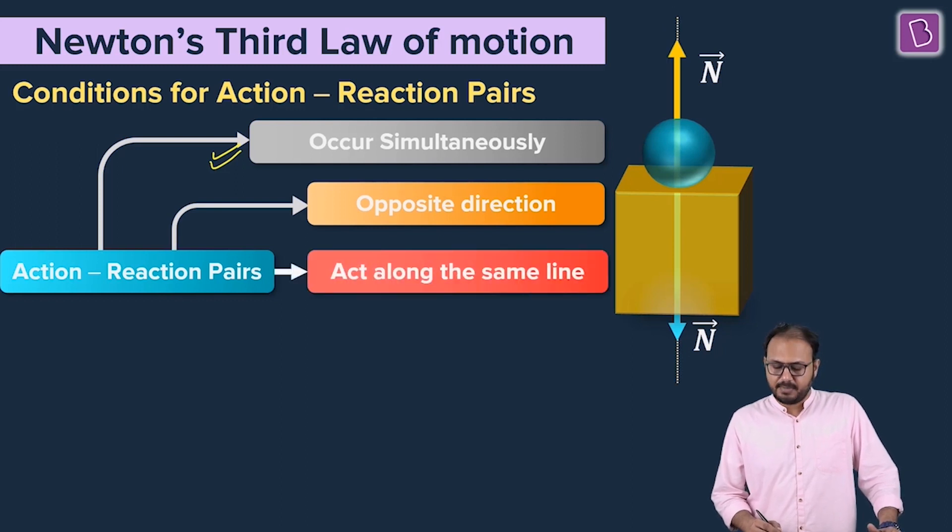Third, act along the same line. Can you see the support? The support of the two vectors is same. Can you see the dotted line? That's the support. In this case, one is upwards, one is downwards along the same line.